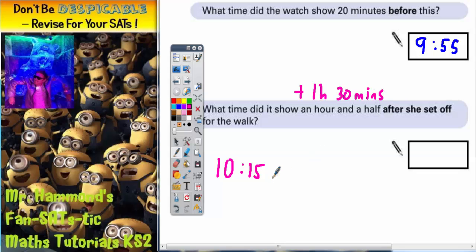So if we add on the hour first of all, if we plus 1 hour that would take us to 11:15. And if we then add on the 30 minutes, add on 30 to your 15 minutes and you're going to get 45 minutes. So the final answer is 11:45.